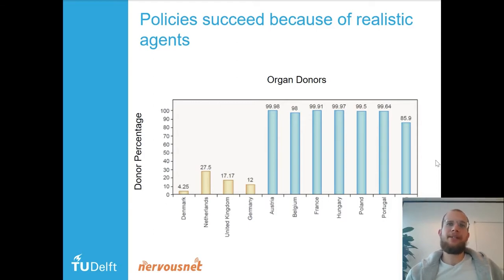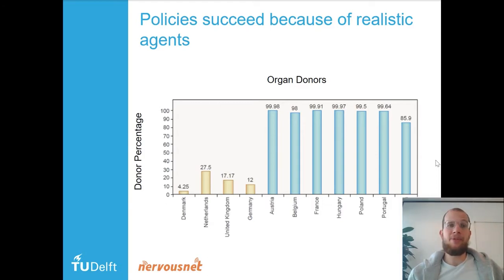It's actually simpler than that. In Denmark and the Netherlands, the policy is to opt in — you are not an organ donor except if you actively opt in for organ donation. And in Austria, Belgium, France, there is an opt-out policy, so you are always an organ donor except if you choose actively not to be.